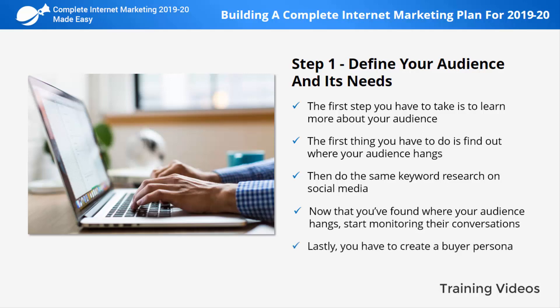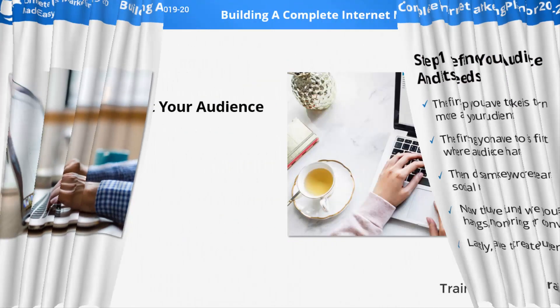Lastly, you have to create a buyer persona — the profile of your potential customer. To build a buyer persona you need to find the average age of the people in your audience, the dominant gender, their buying habits, their online activities, their average level of education, their demographics and locations, what brands they discuss, and what other products, services, and niches they're interested in. Building a buyer persona will help you better target organic traffic with your content and define audience targeting when running paid advertising campaigns.